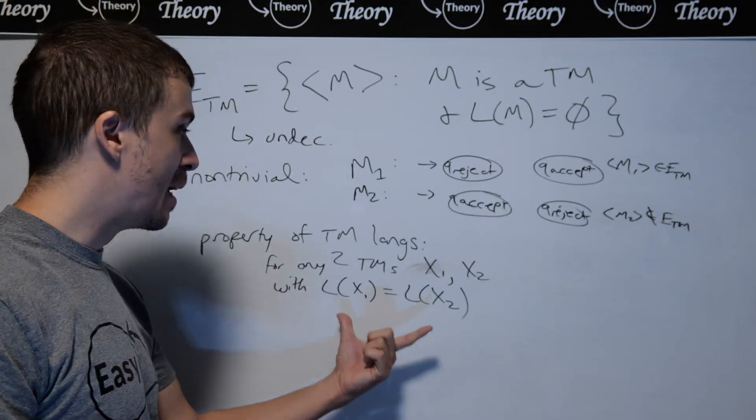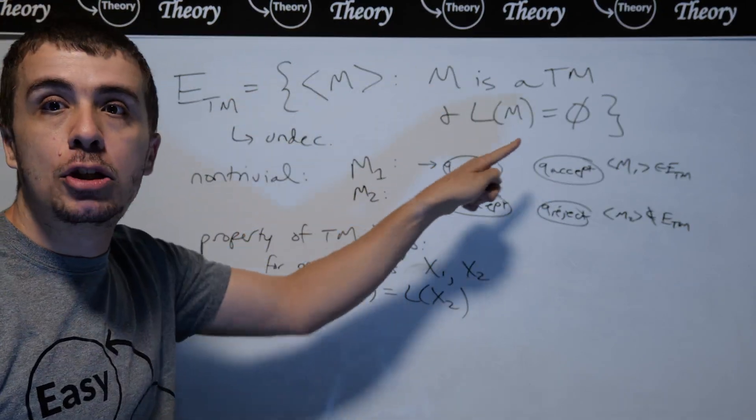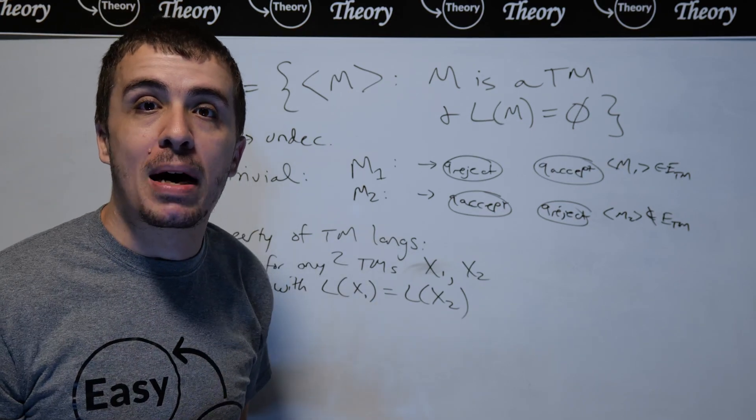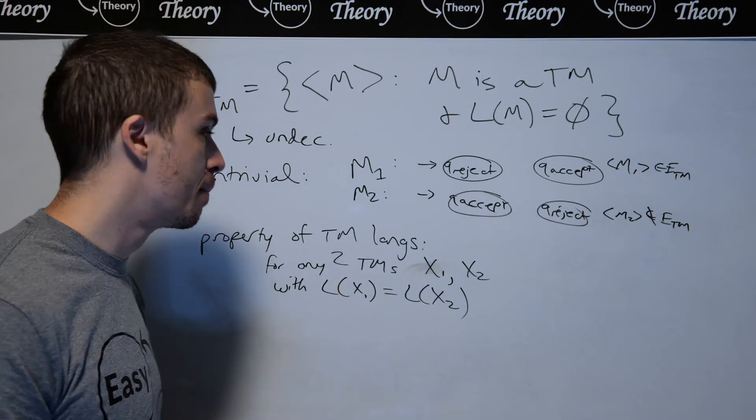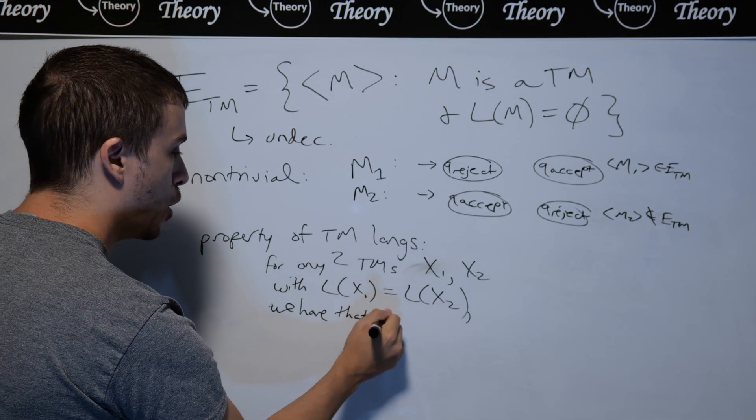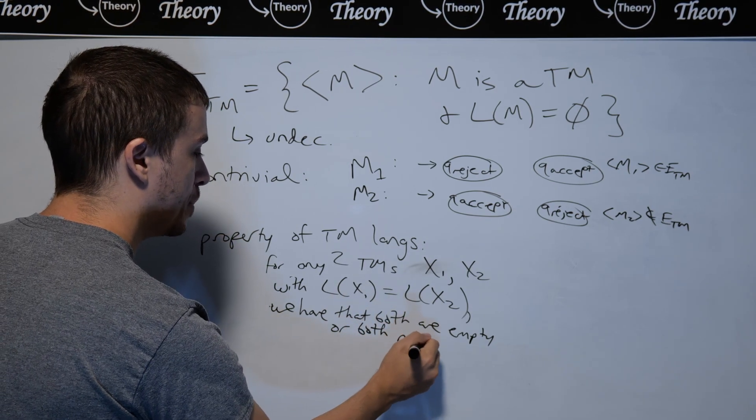Is it possible that if they have the same language, that one of them has empty language and the other one does not have empty language? Well, that's clearly impossible because we assumed that they're the same. So therefore, we have that both are empty or both are not empty.